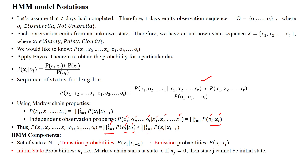So the equation is: the product of P(oi | xi) multiplied by the product of transition probabilities P(xi | xi-1). Here N is the number of states — N equals 3 because we have sunny, rainy, and cloudy. The transition probabilities represent moving from the current state to the next state, and the emission probability represents the observation generated by hidden state i.